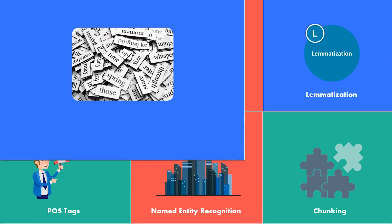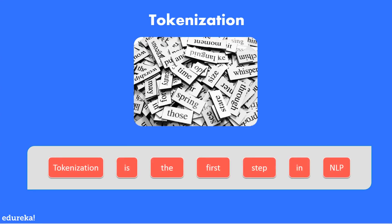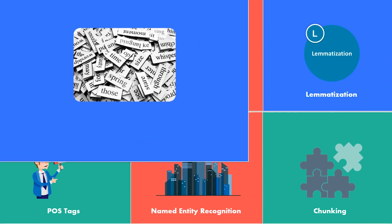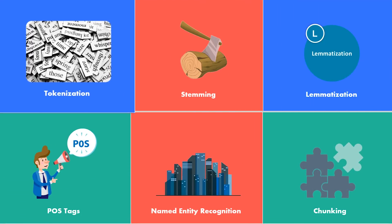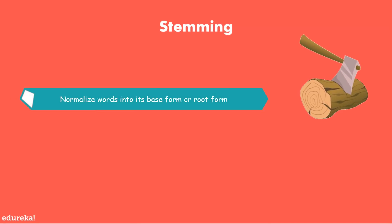Starting with tokenization — tokenization is the process of separating strings into tokens, which are small structures or units. If we look at the example here, taking a sentence into consideration, it can be divided into seven tokens. This is very useful in the natural language processing pipeline.